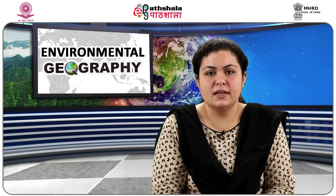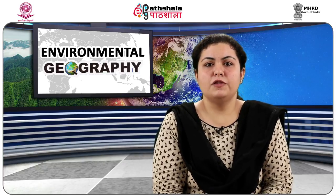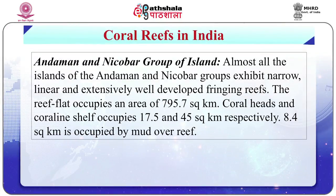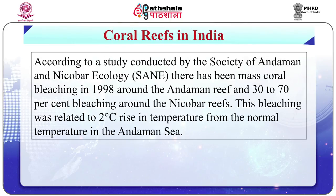Andaman and Nicobar Group of Islands. The Andaman and Nicobar Group of Islands are located in the southeast of the Bay of Bengal, between 6 to 14 degrees north latitude and 91 to 94 degrees east longitude. Almost all the islands exhibit narrow, linear, extensively well-developed fringing reefs. The reef flats occupy an area of 795.7 km². Coral heads and coral shelf occupy 17.5 and 45 km² respectively, and 8.4 km² is occupied by mud over reef. According to a study by the Society of Andaman and Nicobar Ecology (SANE), based at Port Blair, there was mass coral bleaching in 1998 around the Andaman reef and 30 to 70% bleaching around the Nicobar reefs, related to a 2 degrees Celsius rise in temperature from normal in the Andaman Sea.